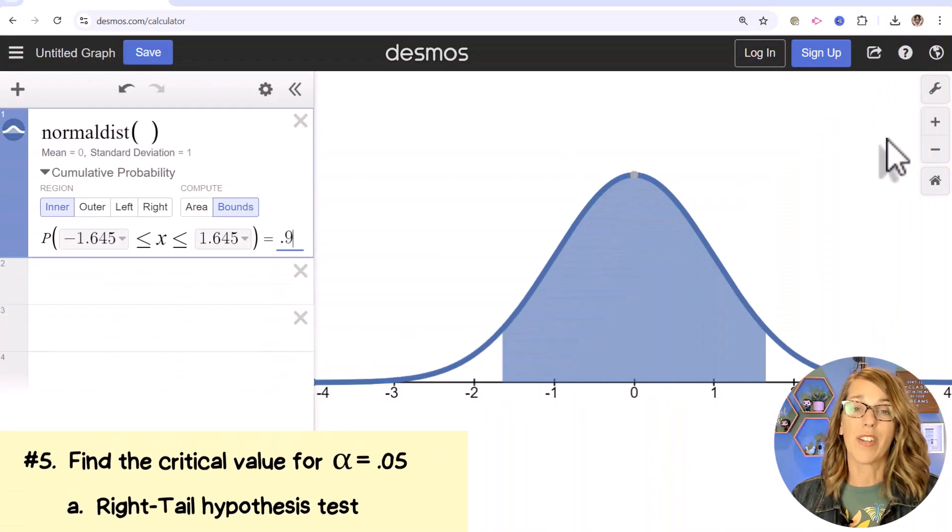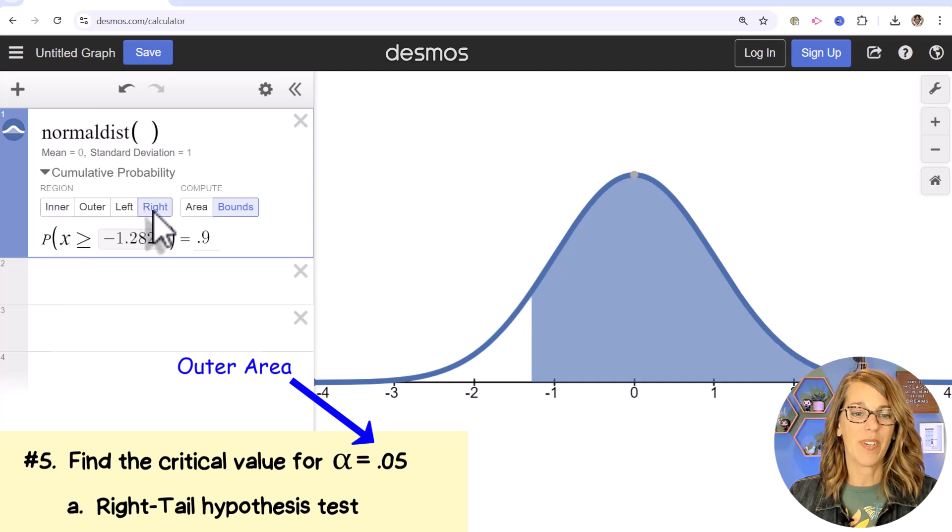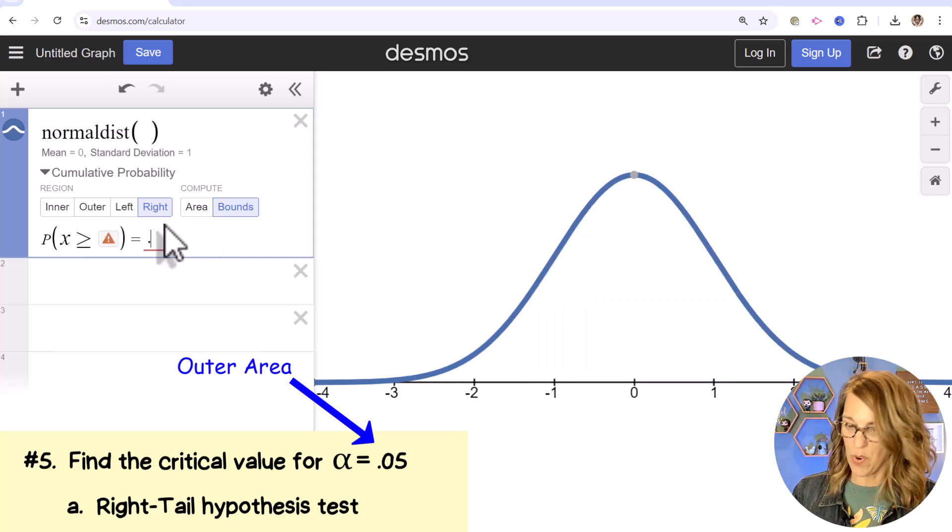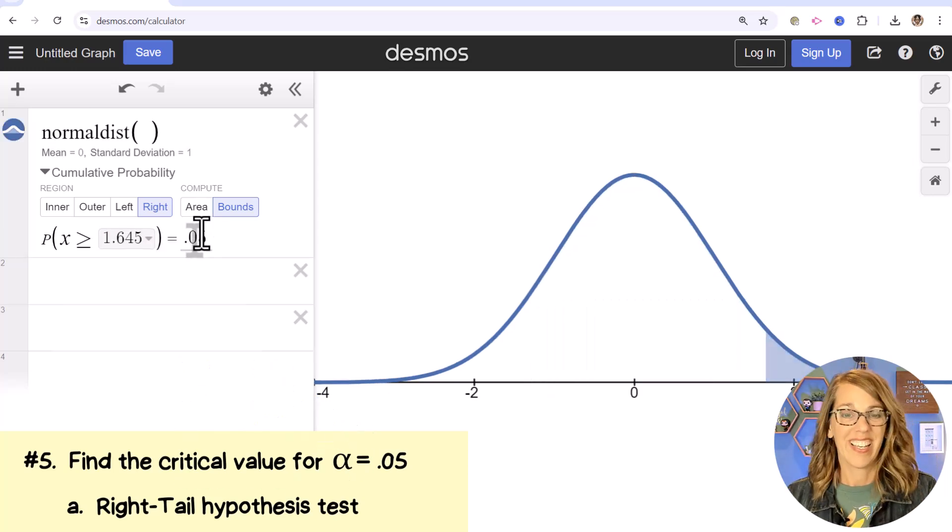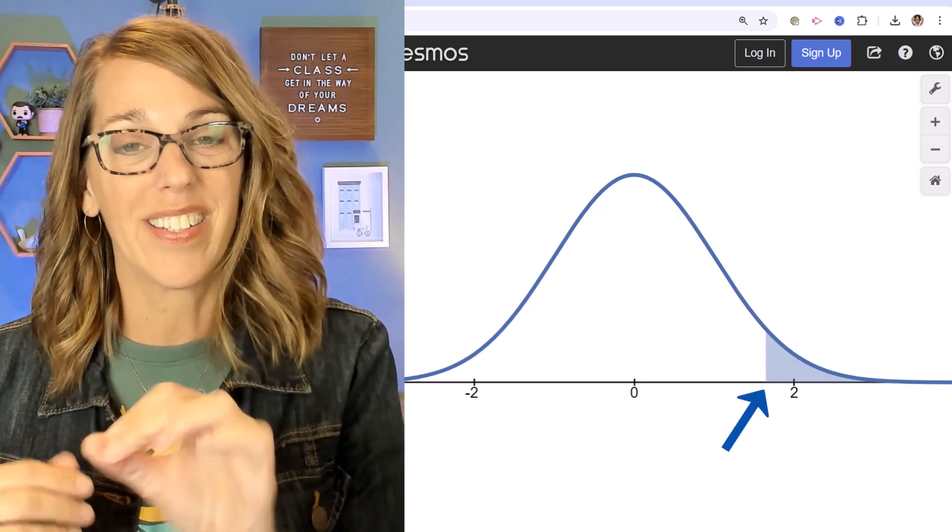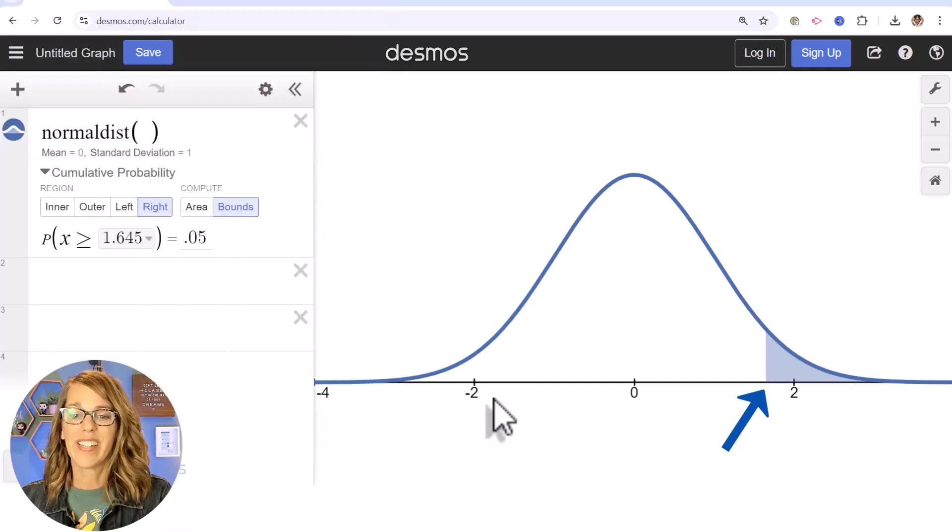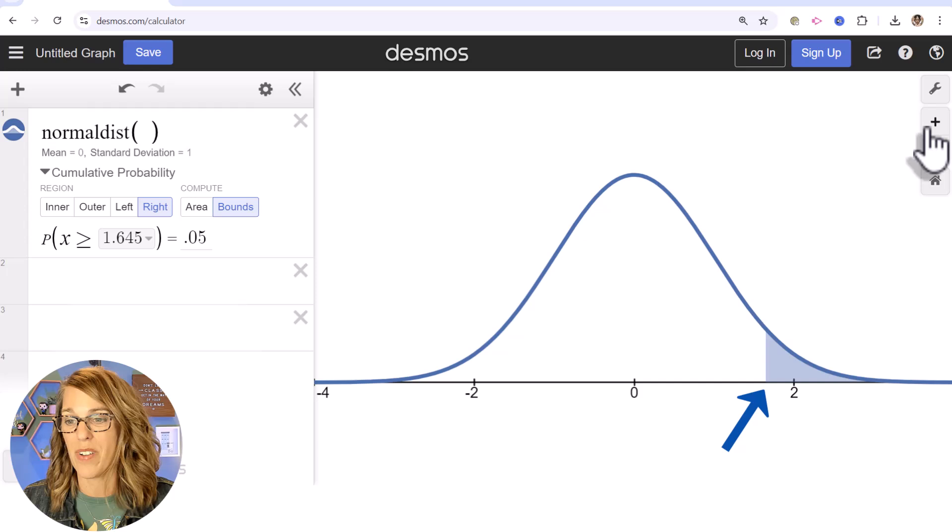So that's going to be one of our outer areas either on the left or on the right or both. So for part A, I've got a critical value or an area of 0.05 and I'm doing this for a right tail hypothesis test. So this is going to be right. I'm computing not the area but the bound. I've been given the area and I can change that to 0.05.